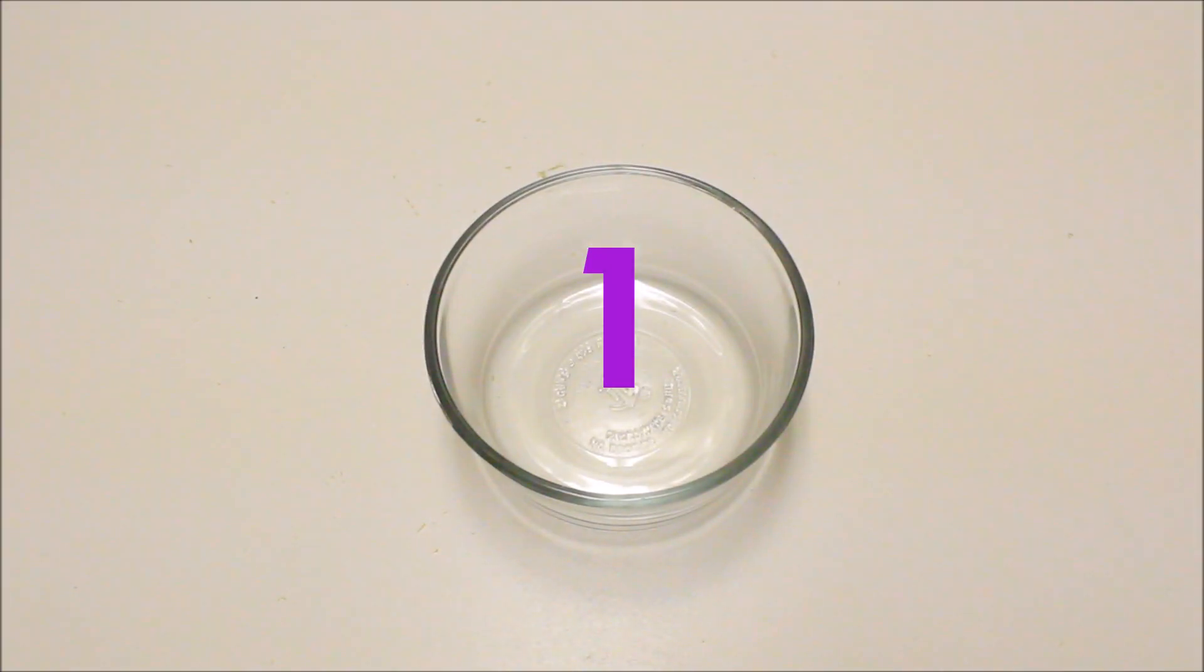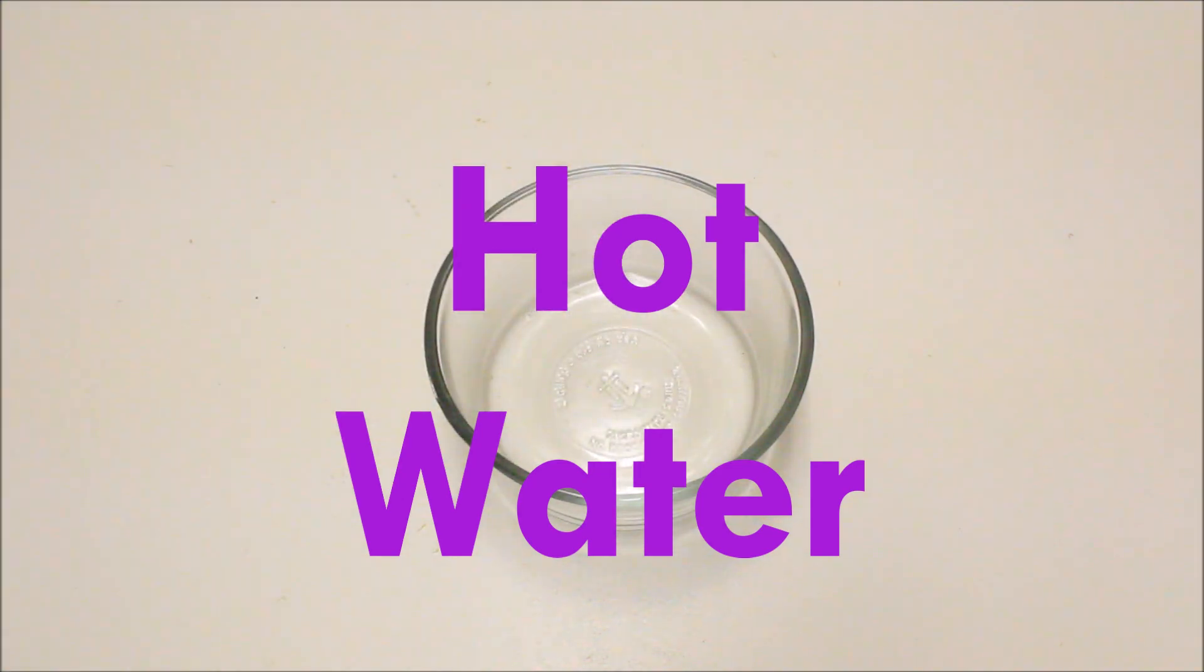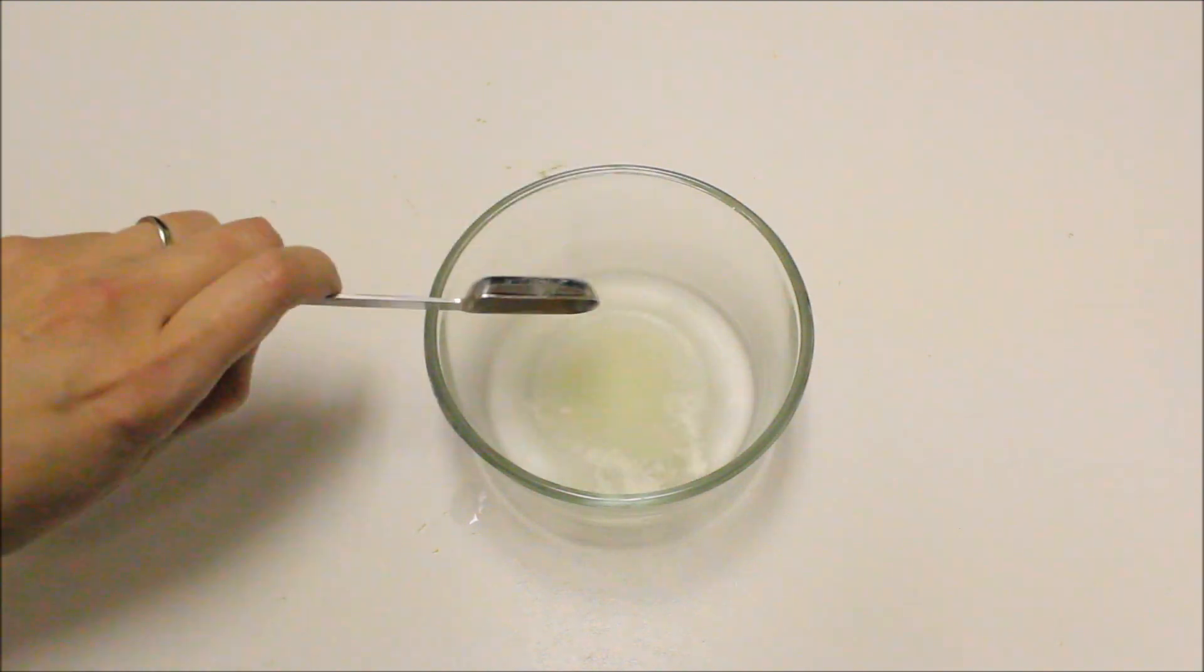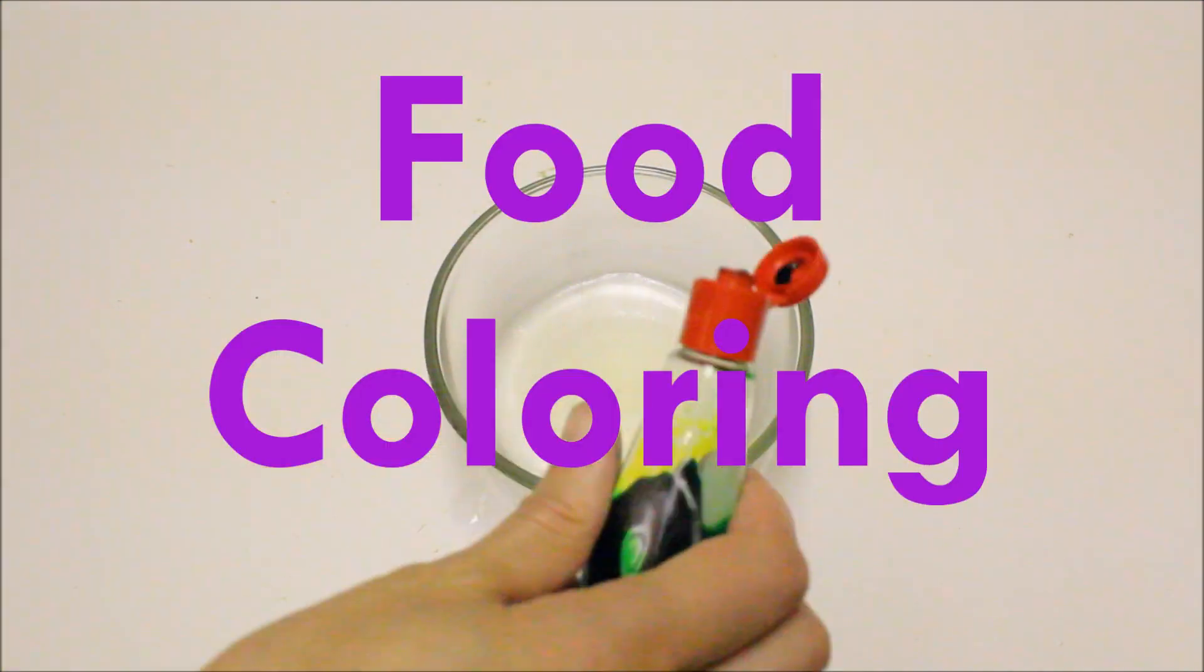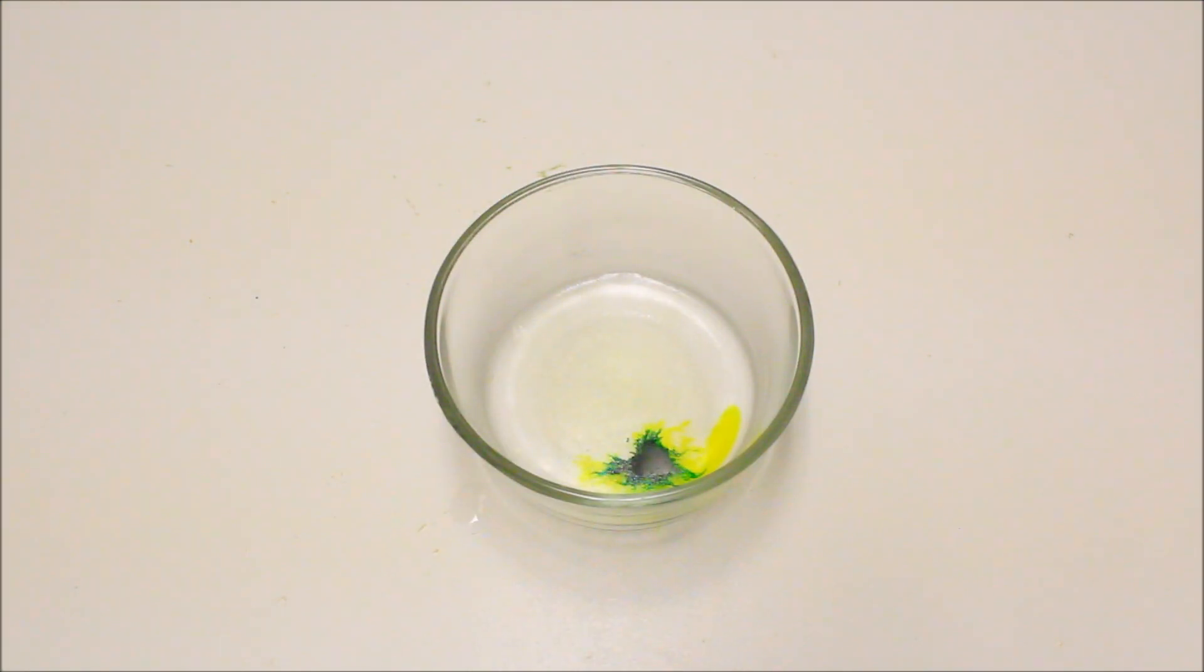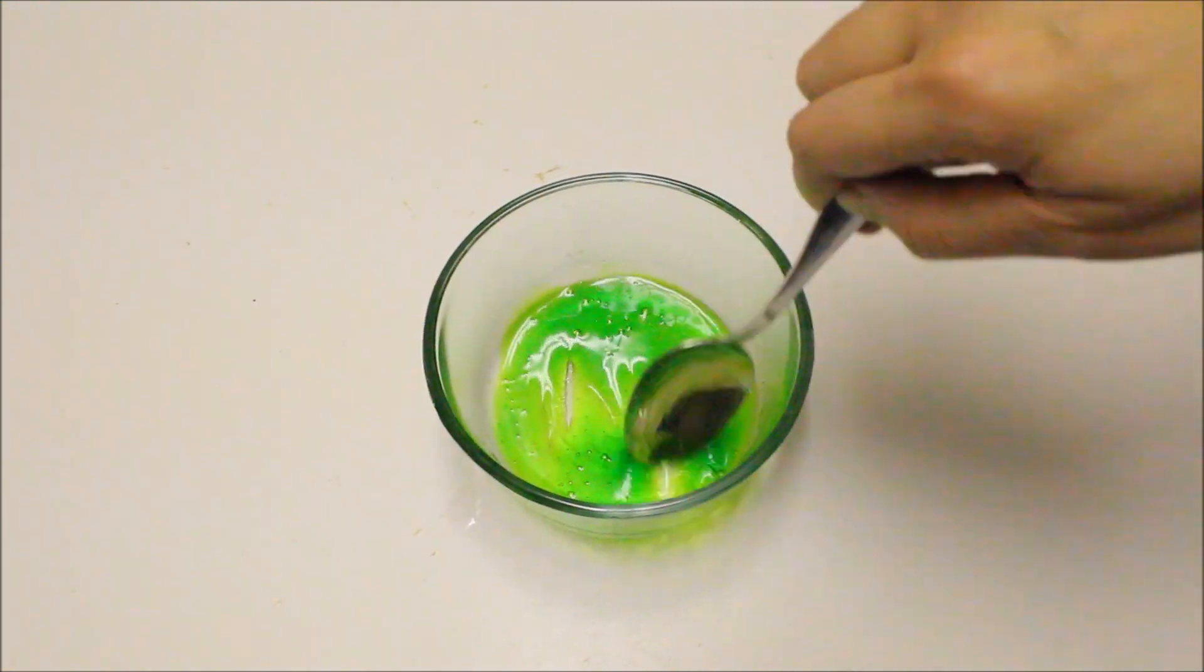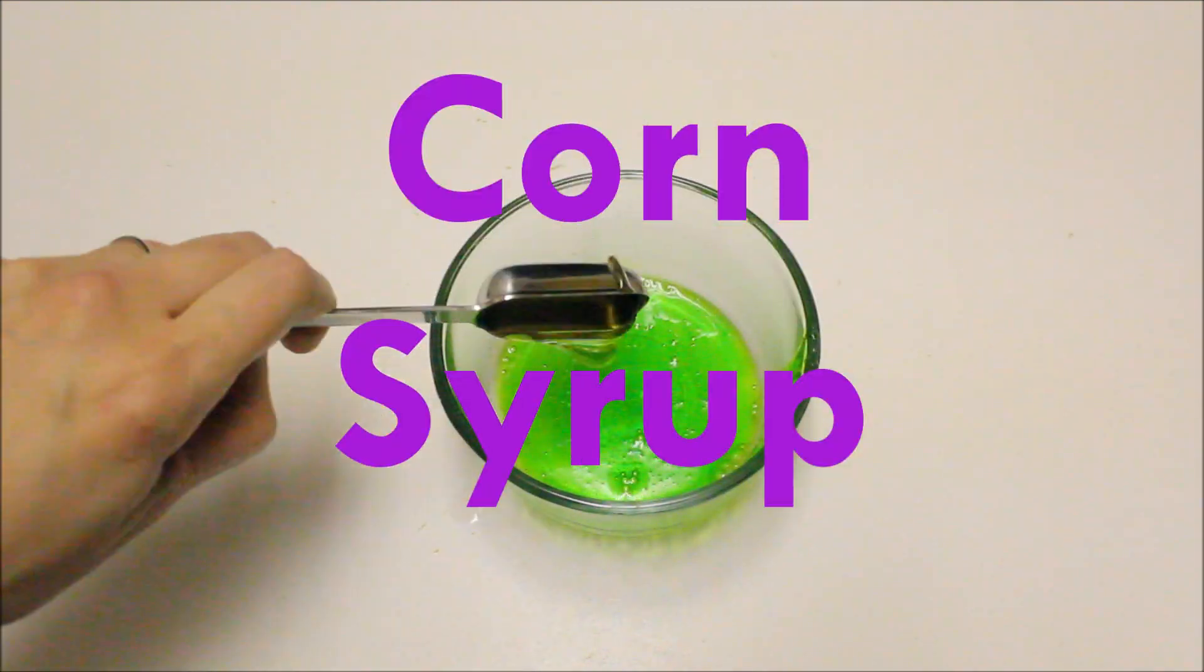For the first type of slime, we are going to need hot water, gelatin, food coloring, and some corn syrup.